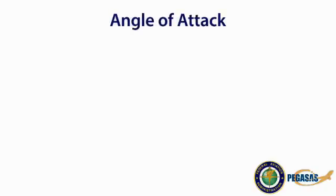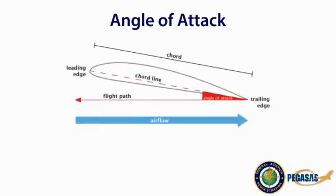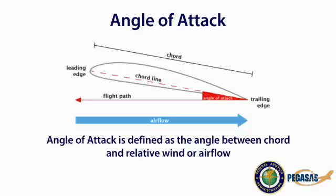To better understand these devices and how they can be used, let's look at what angle of attack is. Angle of attack is defined by two references: the cord line, which is an imaginary line drawn from the leading edge to the trailing edge of an airfoil, and the relative wind, shown by the arrow marked Airflow. Relative wind is equal and opposite to the flight path of the aircraft. The angle of attack is the angle between the cord line and the relative wind.